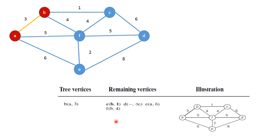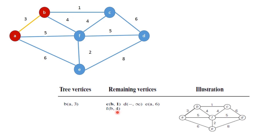The remaining vertices are C, D, E, and F. From C, there is an edge only to B, not to A, so B is the near vertex and the minimum edge distance is 1. D cannot form any edge with A or B, so its near vertex is blank and minimum edge distance is infinity. E can connect only to A with edge distance 6. F can form an edge with A and B, but we choose the minimum, which is B as the near vertex with edge distance 4.